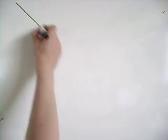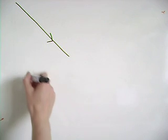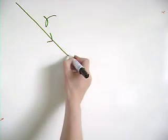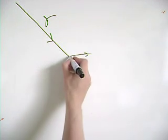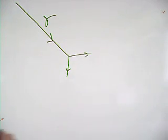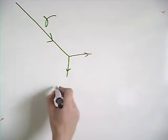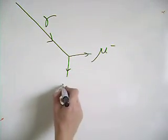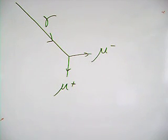The other process, which is the opposite — which is, if you like, a symmetrical pair — is pair production. We can imagine a photon coming along, a particle with a great deal of energy, and that can spontaneously split to form a particle and its antiparticle pair. This time I'm going to think of a muon and its antiparticle equivalent, the antimuon.